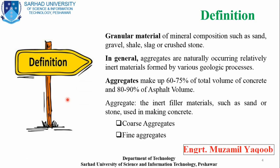Aggregates are general materials of mineral composition such as sand, gravel, and crushed stones. In other words, aggregates are naturally occurring, relatively inert materials found by various geological processes — meaning rock formation under different conditions. An important fact is that aggregates make up 60 to 70 percent of the total volume of concrete, and 80 to 90 percent of asphalt volume. Asphalt is the mixture of bitumen and aggregates.